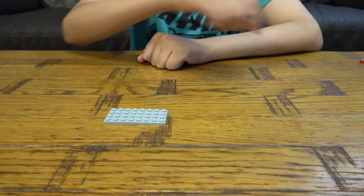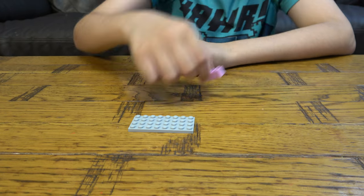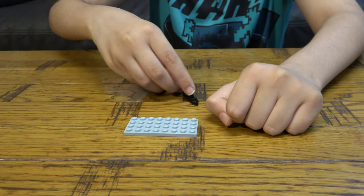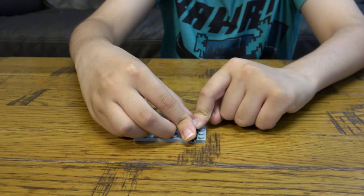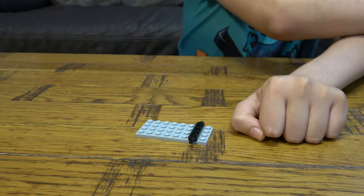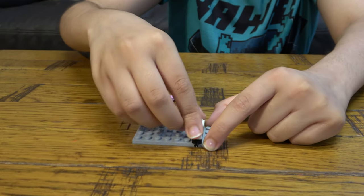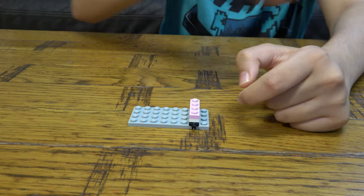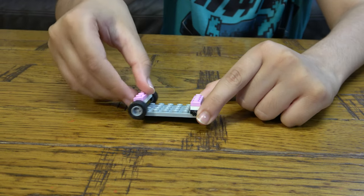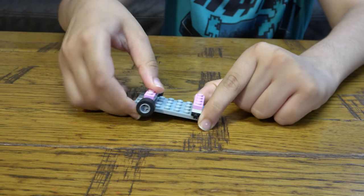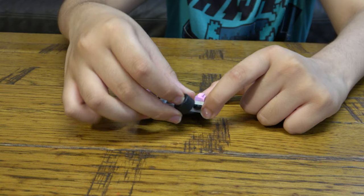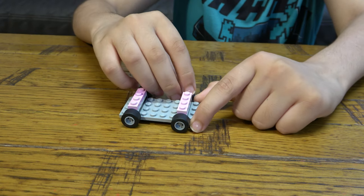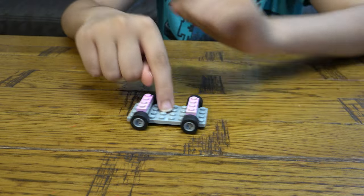First things first, we're going to get this here. Let's get this on the second one, like that. Get a white one and a pink one, and then do the same on the other side. Give it some wheels, there we go.